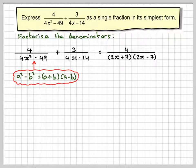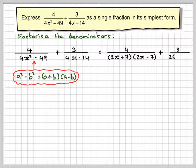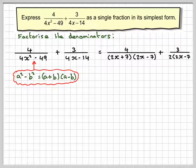And here there's a common factor of 2. So we're going to get 3 over 2 brackets of x minus 7.